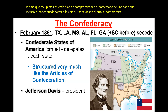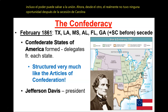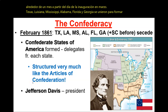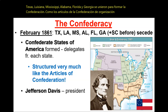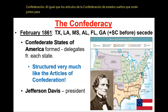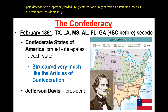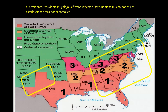After the secession of South Carolina comes February 1861 — only about a month from inauguration day in March. Texas, Louisiana, Mississippi, Alabama, Florida, and Georgia join to form the Confederacy, like the Articles of Confederation — a loose organization of states together to defend themselves from the oppressor. Jefferson Davis is the president, but he does not have a lot of power; the states have more of the power, and he's going to find it difficult to wage war under those conditions.